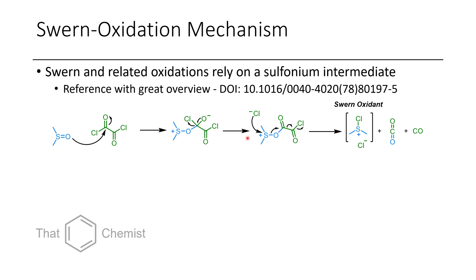Now let's talk about the Swern oxidation. It's important to first understand what every reagent is doing, because this is the type of question you often see on an organic chemistry exam — it checks whether you understand sigmatropic rearrangements. First, DMSO acts as a nucleophile at oxygen and attacks oxalyl chloride. Oxalyl chloride then eliminates a chloride, forming a sulfonium ester species. The chlorine acts as a nucleophile and attacks the sulfonium, displacing the oxygen onto the oxalyl group, which then converts to carbon dioxide, carbon monoxide, and another equivalent of chloride — neutralizing to give the active chlorosulfonium Swern reagent.